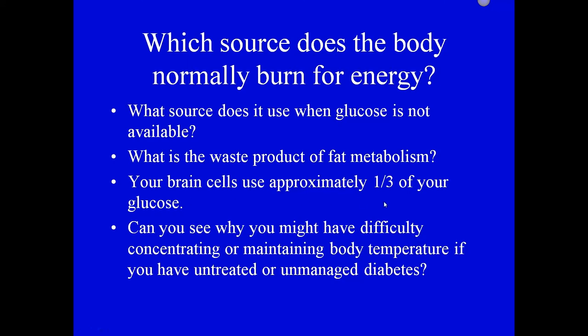The brain cells use approximately one-third of the glucose in our blood. Without insulin to help glucose move into the cells, you'd have difficulty maintaining concentration and body temperature — since heat is produced through cellular metabolism. A diabetic patient who doesn't check blood sugars can spiral: their blood sugar gets out of balance, their mental processing deteriorates, and eventually someone may find them unconscious. Then healthcare providers face the question: did they take too much insulin, or not enough?